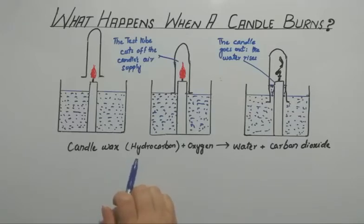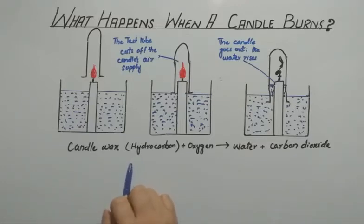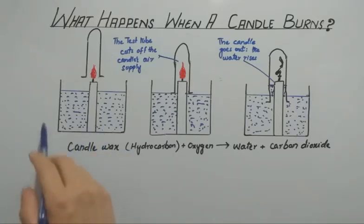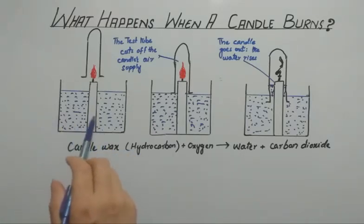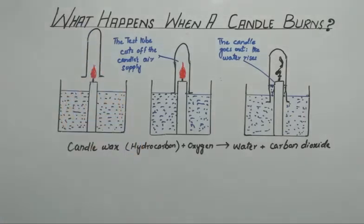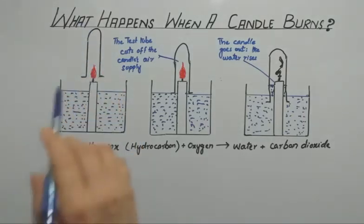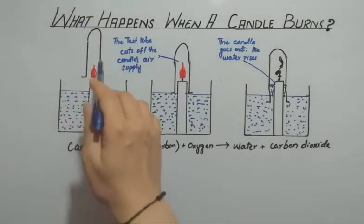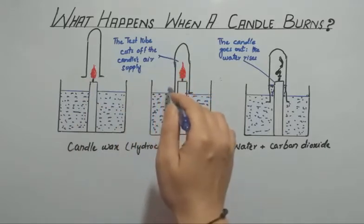This diagram shows you what happens when a candle burns. In this diagram we have a beaker, we have a candle, and we have a test tube.